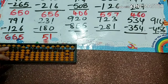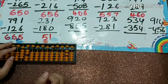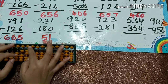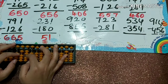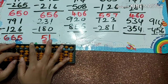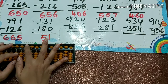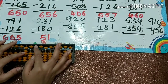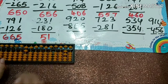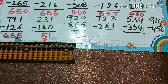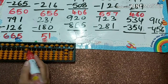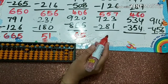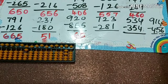Next one: 920 minus 855. Minus 8, minus 5, then minus 1. Answer: 65.